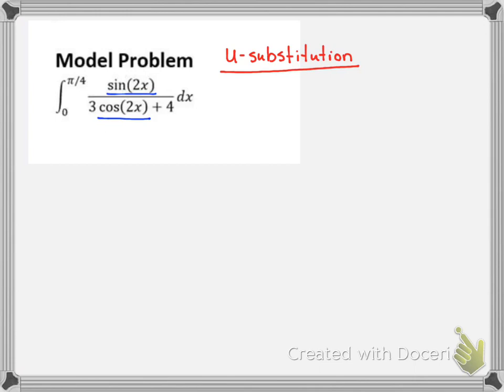Also the derivative of sine is basically cosine, so some sort of derivative of the inner function will cancel something out. And so I've got two choices.